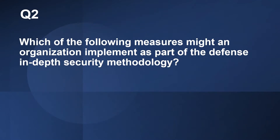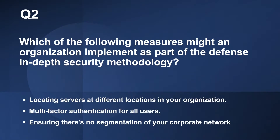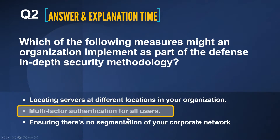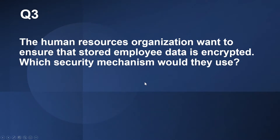Question number two: Which of the following measures might an organization implement as part of the defense in depth security methodology? We learned about defense in depth in episode two or three. The options are: locating servers at different locations in your organization, multi-factor authentication for all users, or ensuring there is no segmentation for your corporate network. The correct answer is multi-factor authentication for all users. Multi-factor authentication is an example of defense in depth at the identity and access layer.